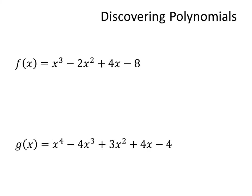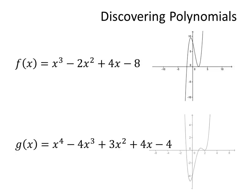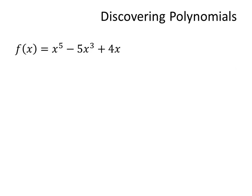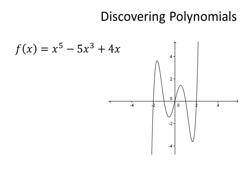In this unit, we are going to be looking at higher degree polynomials. For instance, f is a degree 3 polynomial, which we call a cubic, and it looks like this. g is a degree 4 polynomial, and it looks like this. A degree 5 polynomial might look like this.